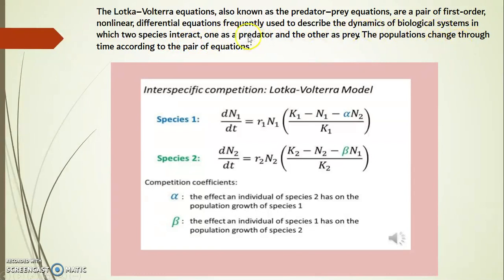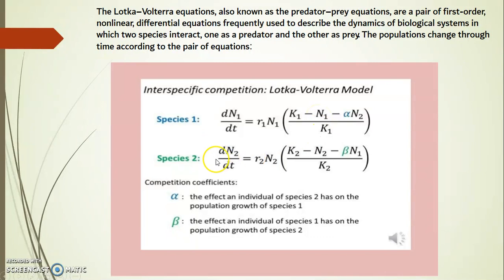The population changes through time according to the pair of equations. This Lotka-Volterra model represents inter-specific competition — the competition between two species. For species 1: dN1/dt = r1·N1·(K1 − N1 − α·N2) / K1. For species 2: dN2/dt = r2·N2·(K2 − N2 − β·N1) / K2.